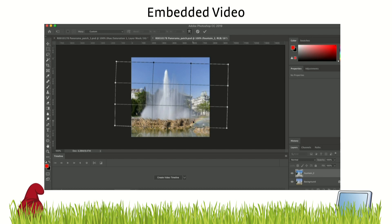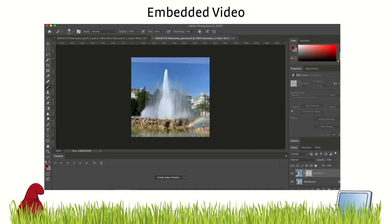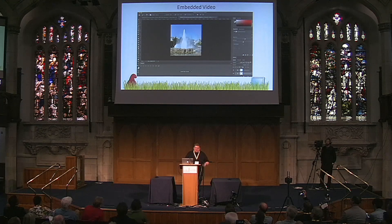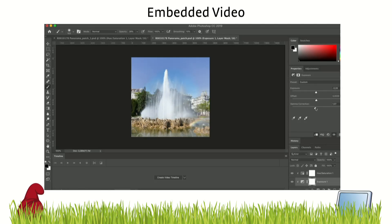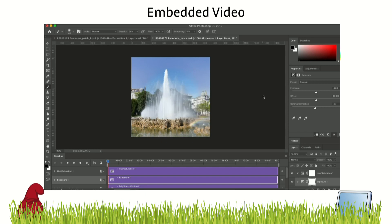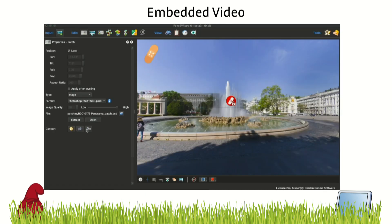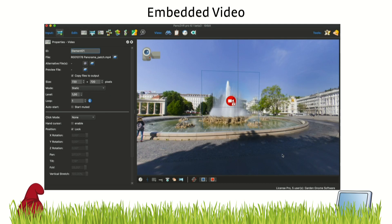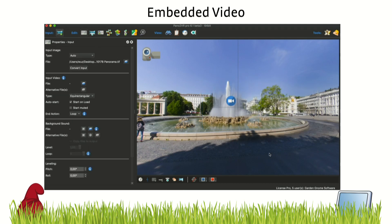Then you create a mask and take out the part you want moving. Then you make the video match the image so that the colors look the same, because videos often have a different color space. When you're done, you just render out the video. Then when you're back in Pano2VR, you just click the 'convert patch to video' button, select the file you just created in Photoshop, and the video is embedded in that place. We will have a tutorial on our website soon.